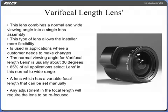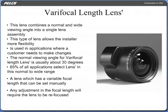A varifocal lens combines a normal and wide viewing angle into a single lens assembly. This type of lens allows the installer more flexibility when setting the view angle for a customer. This lens is used in applications where a customer needs to make changes. The normal viewing angle for varifocal length lenses is usually about 30 degrees, with the wide angle being between 60 and 80 degrees.